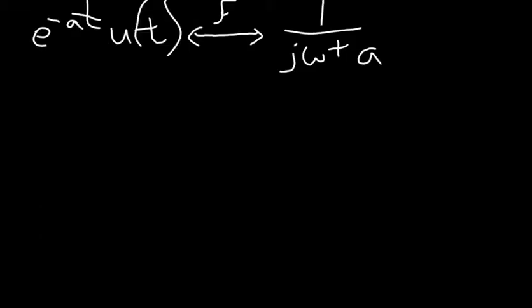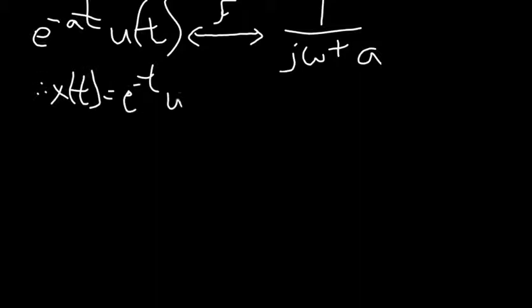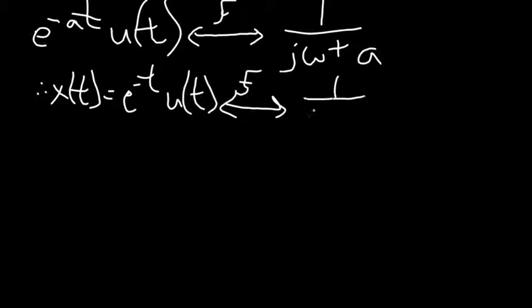Using the property that e to the minus at times u(t) Fourier transforms into 1 over j omega plus a, and applying that to x(t) which is e to the minus t times u(t), the Fourier transform becomes 1 over j omega plus 1.